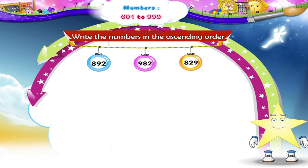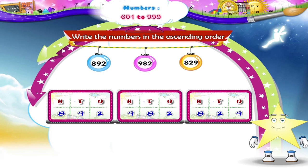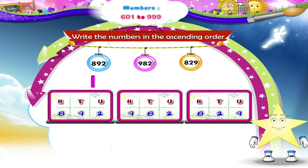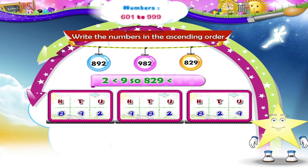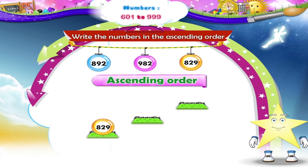What should we do first, Sari? Yes, we shall first find the smallest and the biggest number. On comparing the hundredths place digit, we find that 982 is the biggest. Out of 829 and 892, which is the smaller number, Sari? We have to compare the tenths place digits. 2 is less than 9. So the number 829 is smaller than 892. So the ascending order is 829, 892, 982.